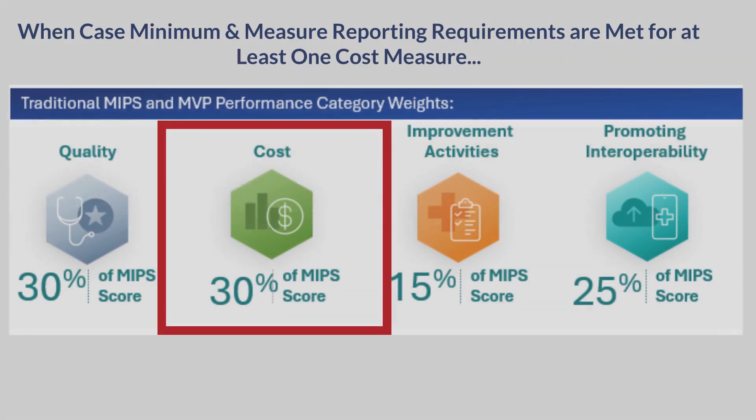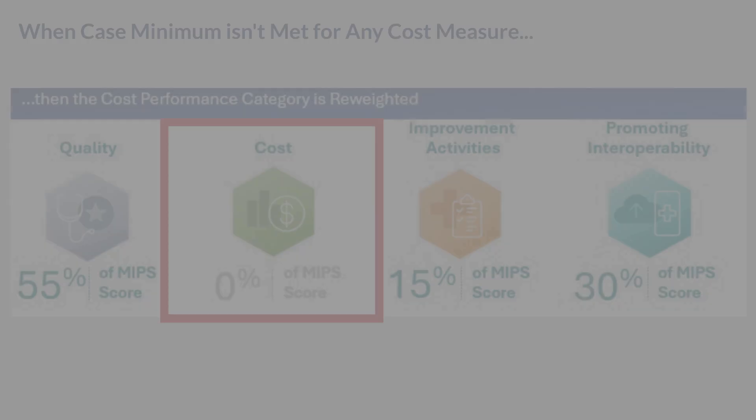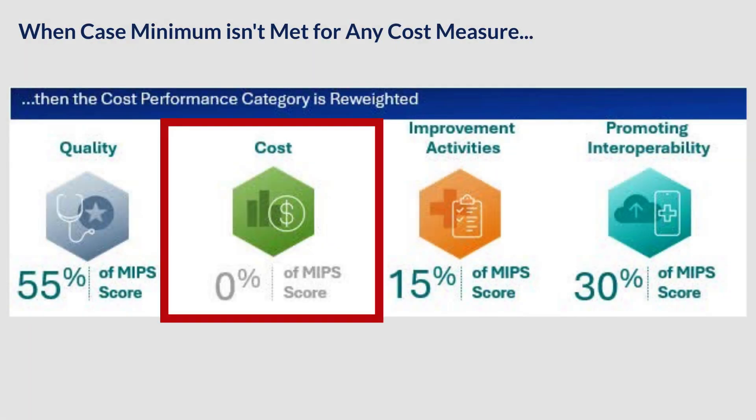If a clinician can't be scored on any cost measures because they don't provide the type of care currently covered by cost measures, or because they don't meet the case minimum, then their cost performance category score will be reweighted.